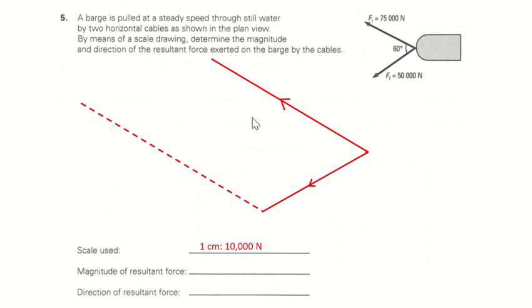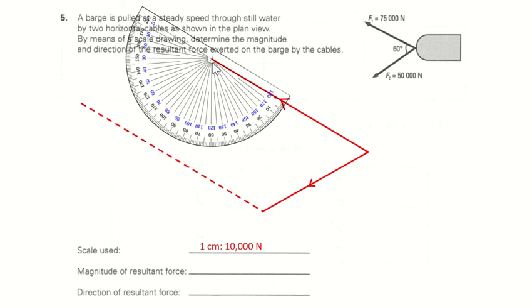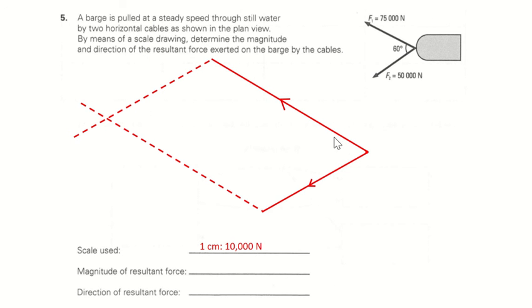And then after that, just move your protractor all the way to the other end, draw again 120 degrees, because corresponding angle to this will be 60, will be 120, and then you just draw that line, and where it intercepts, you will see that actually forms a parallelogram.